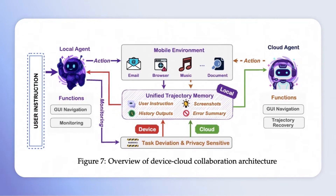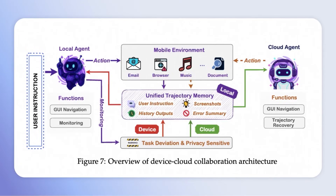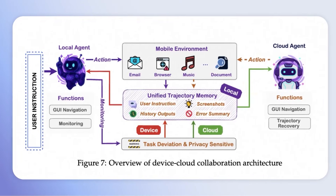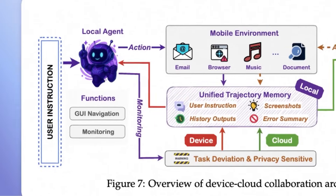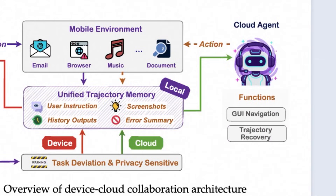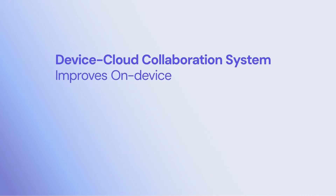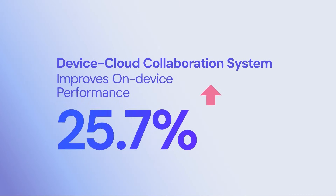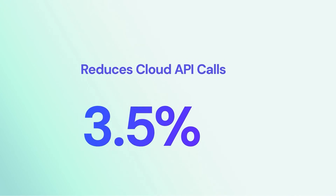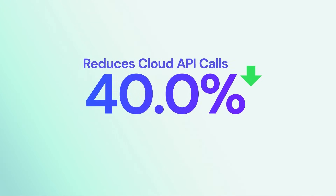High performance, no network dependency, and strong privacy protection — MyUI delivers through its native device-cloud collaboration system. The lightweight local agent handles execution and monitoring, while the cloud model is switched in only when execution diverges from user intention. This system improves on-device performance by 33% and reduces cloud API calls by over 40%.